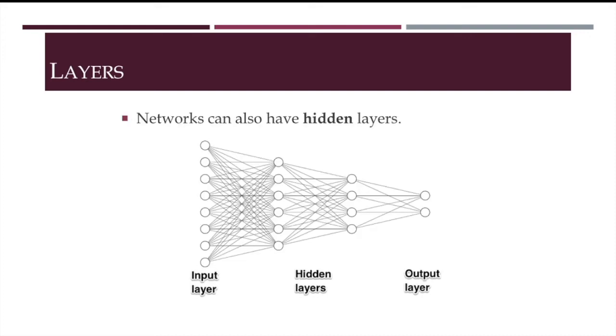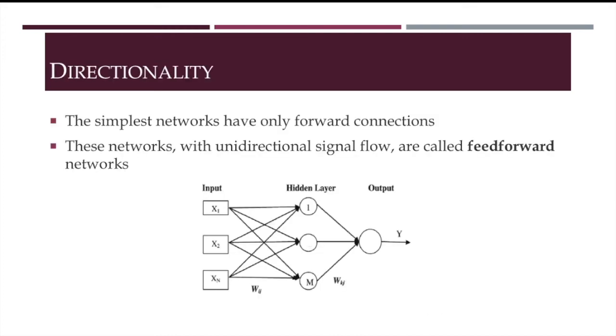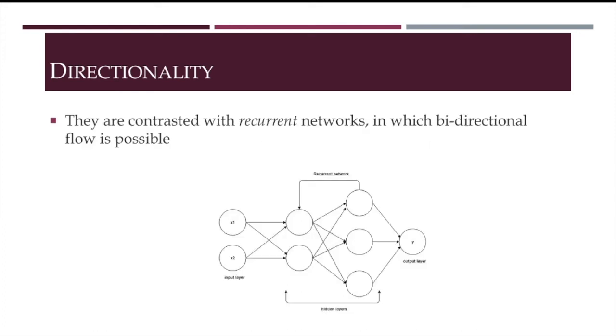Networks can have more layers sandwiched between the input and the output. These are called hidden layers. In the simplest case, networks only have forward connections, such that the signal goes from the input layer to the output layer and not the other way around. This is in contrast with recurrent networks, which have a flow of signals in both directions.